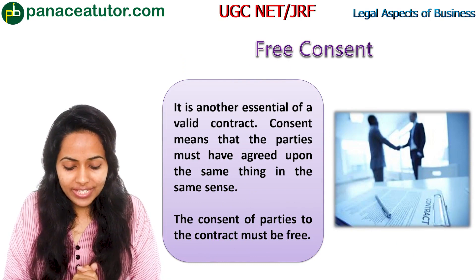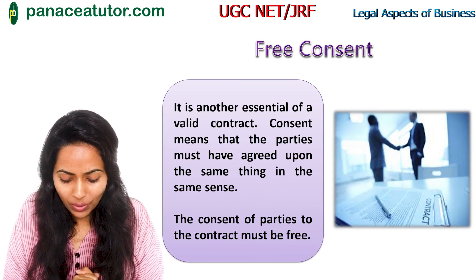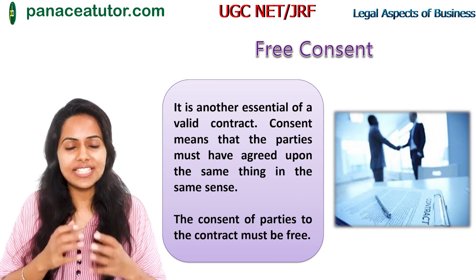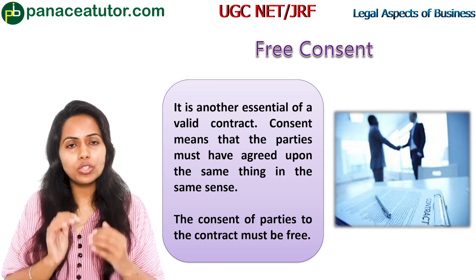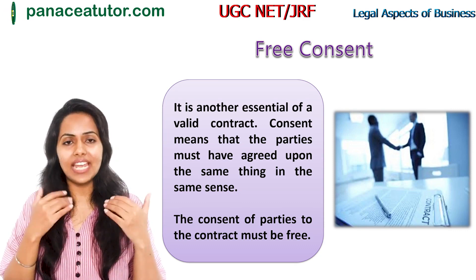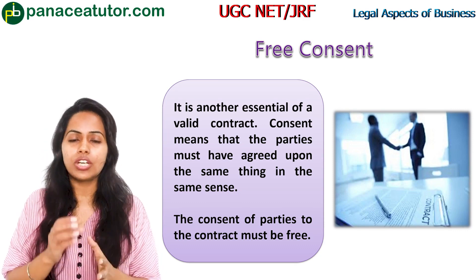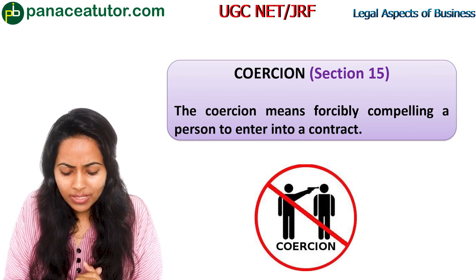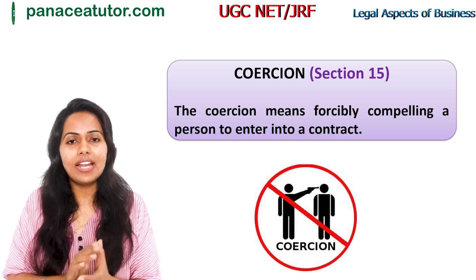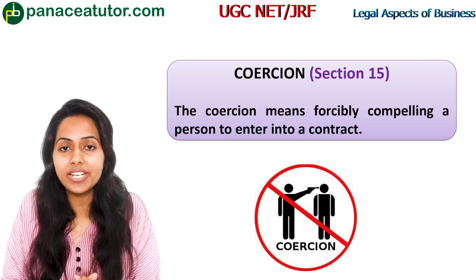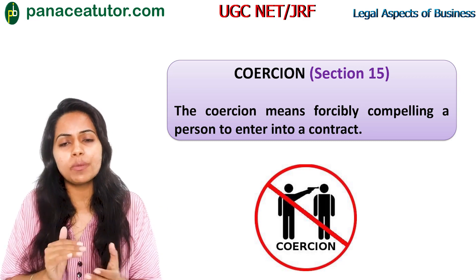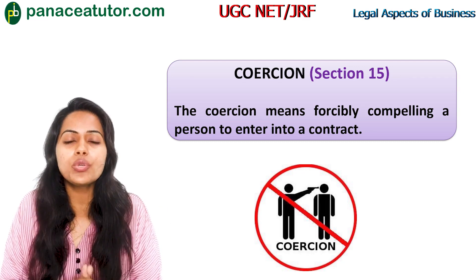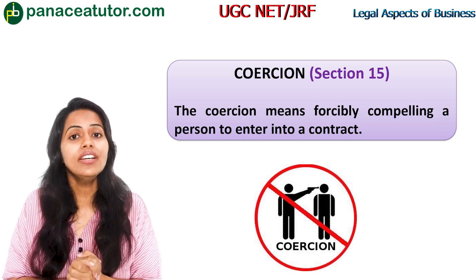The fifth essential element is free consent. Consent means parties must have agreed upon the same thing in the same sense. There are elements that vitiate free consent. The first is coercion under Section 15, which means forcibly compelling a person to enter into a contract — for example, holding a gun to someone's head and forcing them to sign a house registry paper. That is coercion. A contract entered into under coercion is not a valid contract.